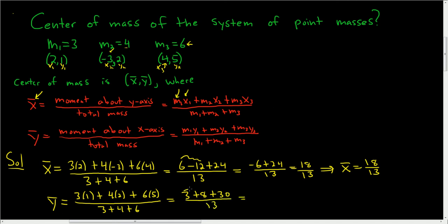So here we have 11 plus 30, so we get 41 over 15. So the y-coordinate of the center of mass is 41 over 15.